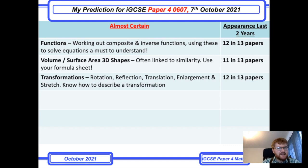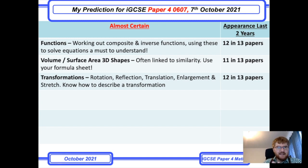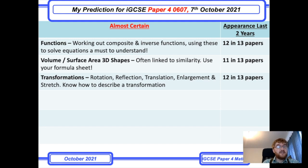Don't neglect transformations — this topic is often covered early in school and then forgotten. You need to know how to perform rotation, reflection, translation, and enlargement without tracing paper. Stretch didn't come up in 2021 but has appeared before. More importantly, you need to be able to describe a transformation: for a rotation, state the angle (90° or 180°), direction (clockwise or anti-clockwise), and the centre of rotation. If any of this is unfamiliar, revise it — especially if you only have three or four days until your exam.